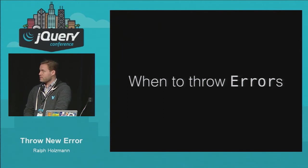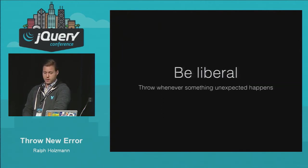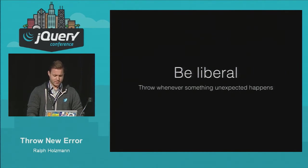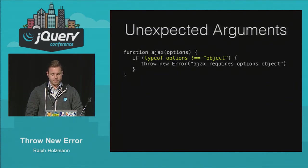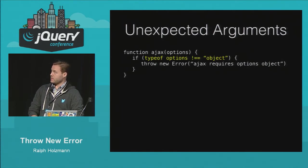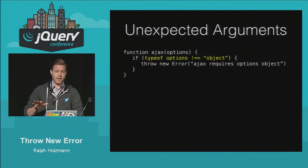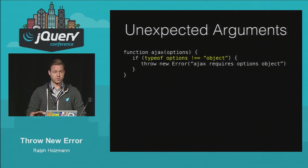When is the best time to throw errors? Pretty much be liberal about it — throw whenever anything unexpected happens. For example, unexpected arguments: if you're checking an Ajax function that needs options and there are no options, you should throw. You shouldn't let your program die somewhere else down the line. The errors that you throw will always be infinitely more valuable than whatever the browser generates when your program dies five functions later.